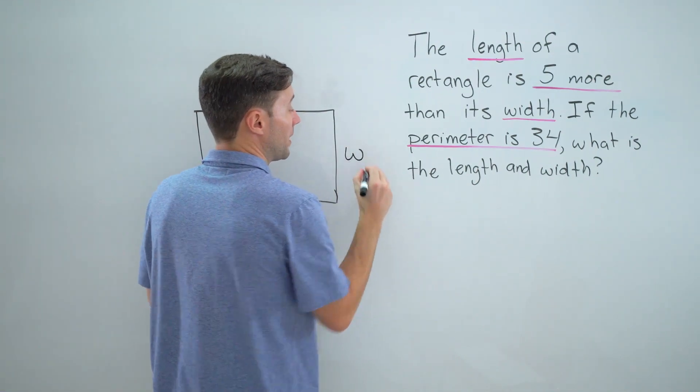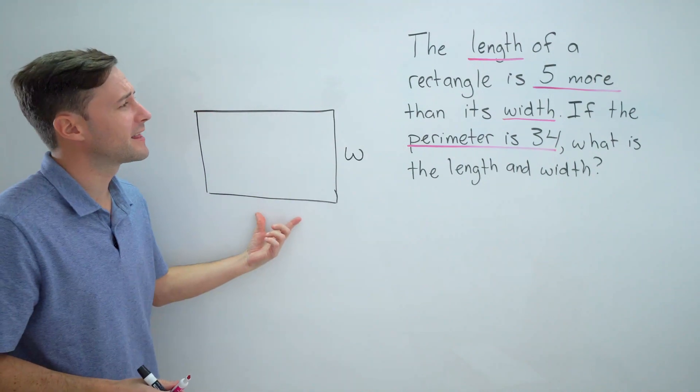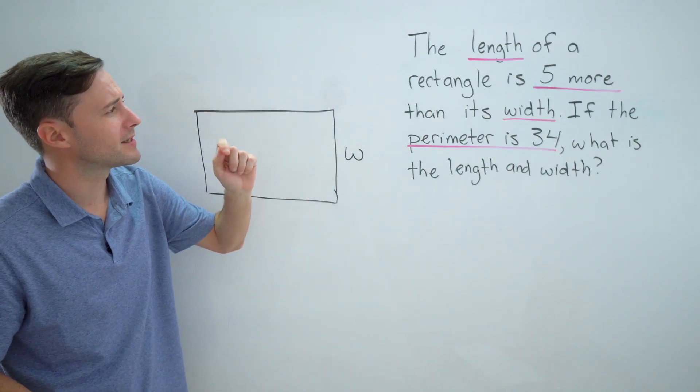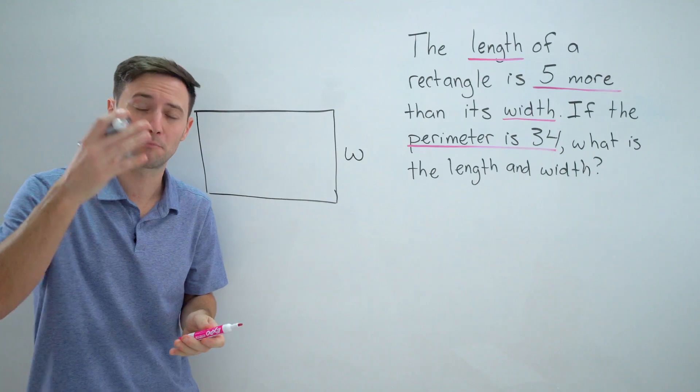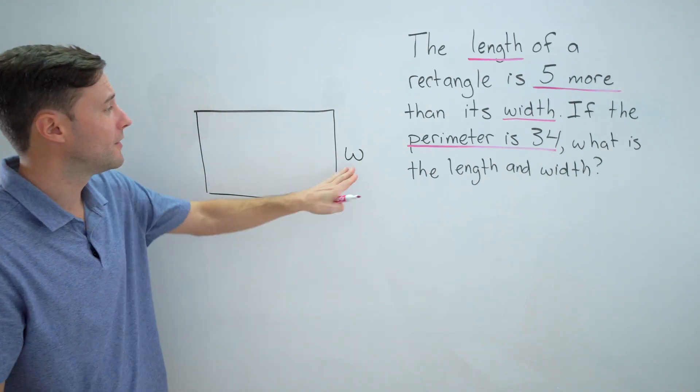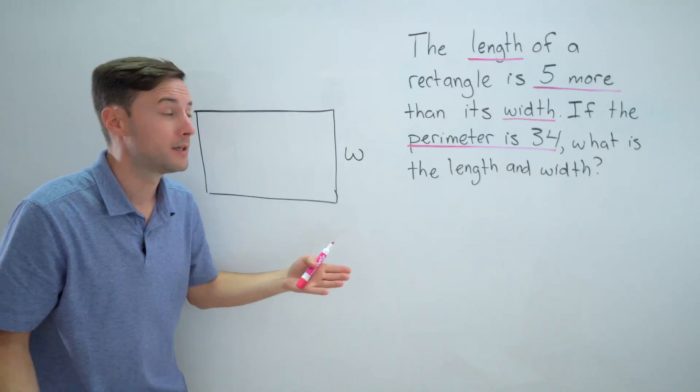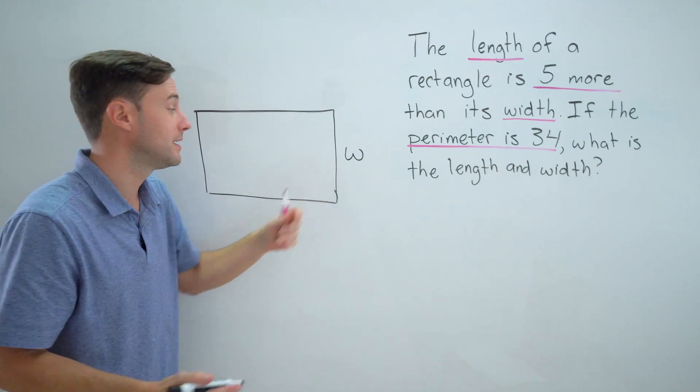W for width—it makes sense. If this is the length, it says the length of the rectangle is five more. Five more means plus five. So if the width is w, five more than that would be w plus five.